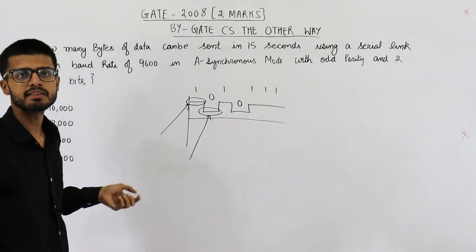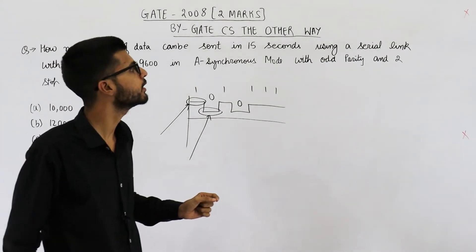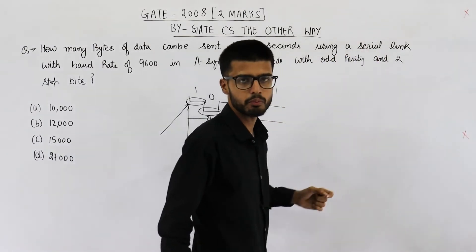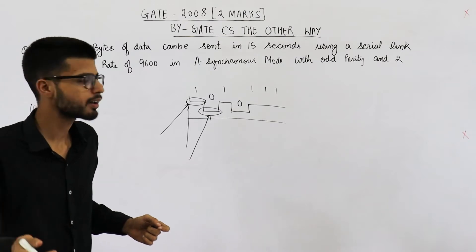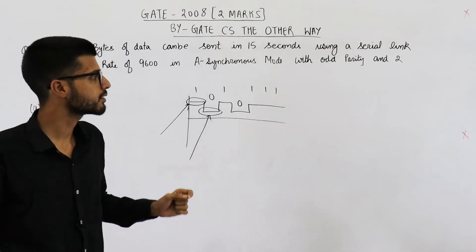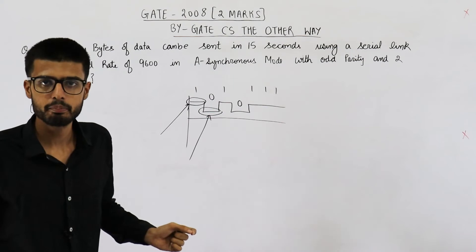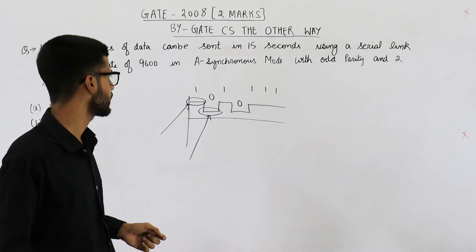9600 baud rate means 9600 bits per second if you are talking about serial communication, because here we don't use any Manchester coding or differential Manchester encoding, simply because we have start and stop bits for synchronizing the data.